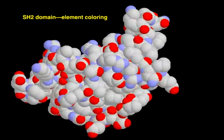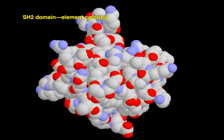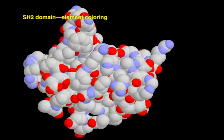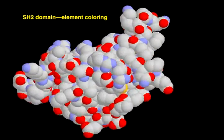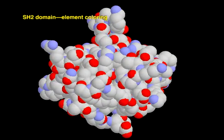In this space-fill view, different atoms in the polypeptide chain are colored according to element. By convention, carbon is colored gray, nitrogen blue, oxygen red, and sulfur yellow.